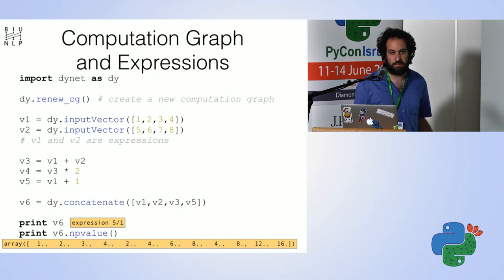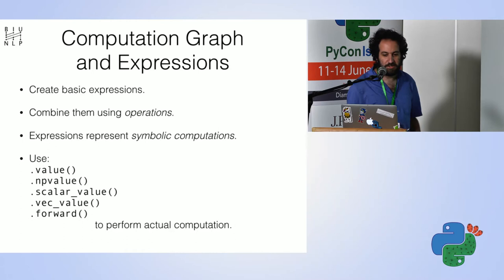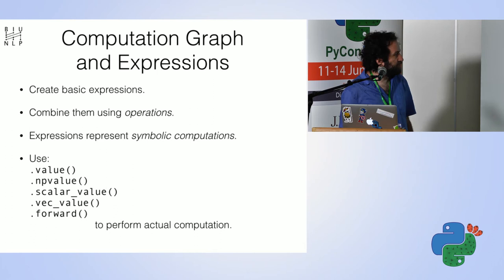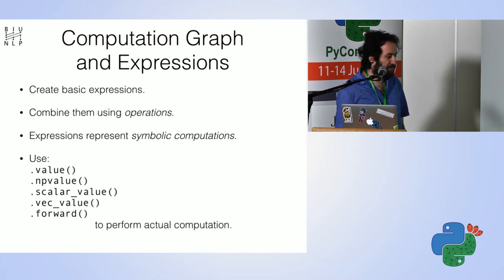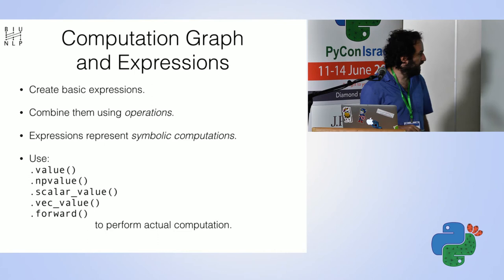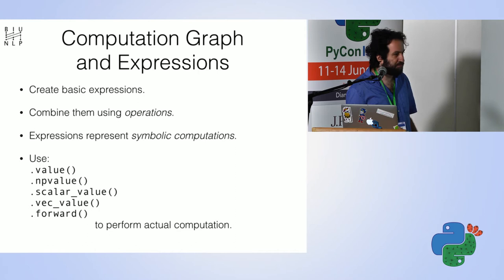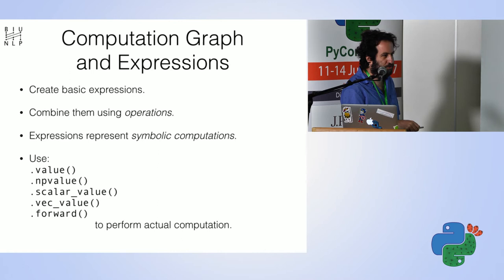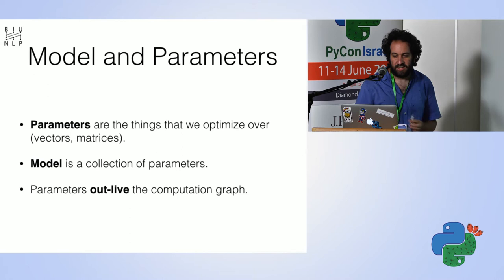All these variables look just like Python computations but don't compute anything — they just build a larger graph where each variable is a node. Operations define the graph structure. If you want to get the actual value, you call v6.npvalue(), which runs forward and returns a numpy array with the actual value of the computation. You can use value, npvalue, scalar_value, or vec_value — they're basically all the same function underneath.